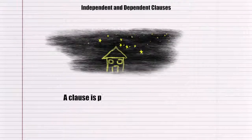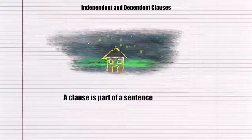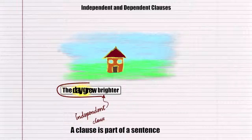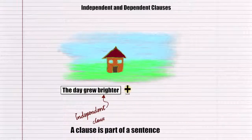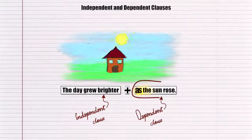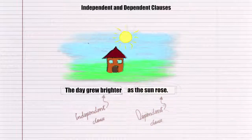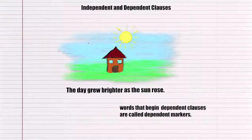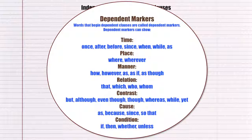What are independent and dependent clauses? A clause is part of a sentence. It can be independent or dependent. Words that begin dependent clauses are called dependent markers.